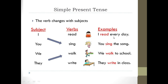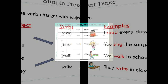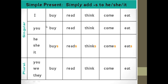But if your subject is singular — he, she, it, or any name — then you use 's' with the verb. Here is a simple table: with 'I', we do not use 's' — I buy, I read, I think, I come, I eat. Same with 'you' — you buy, you read, you think, you come, you eat. With singular subjects he, she, and it, we use 's' — he buys, she buys, it buys, he reads, he thinks, he comes, he eats. Just remember: he, she, it or any name — use 's' with the verb.